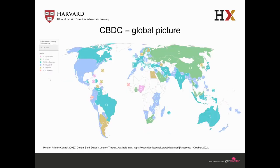On the global scale, CBDC is now being explored by many countries. In total, 105 countries representing over 95% of global GDP are exploring CBDC. Some projects are pilot projects, some are already launched, and some are in development. Currently, the majority of countries that have launched CBDC are emerging economies.